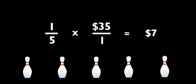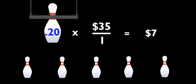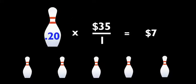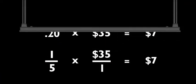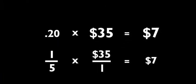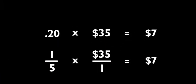Seven dollars. Nice. We could have written 20% as a decimal too — point two zero — and then multiplied the price by the decimal instead of the fraction. Exactly. In fact, decimals usually work better when you're figuring out money. Let's try it to be sure.